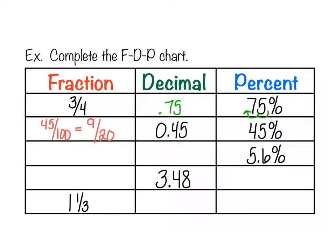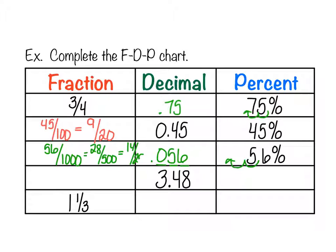For 5.6 percent, we need both boxes. Moving the decimal backwards twice gives 0.056. Writing 56 over its place value — it's in the thousandths column, so that's over 1000. Reducing: divide by 2 gives 28/500, divide by 2 again gives 14/250, divide by 2 once more gives 7/125. So the reduced fraction is 7/125.